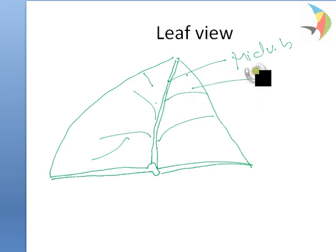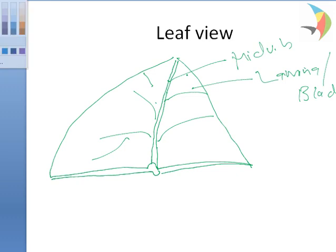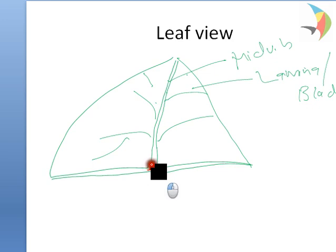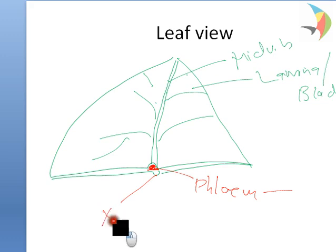This is the lamina, we call it lamina or blade. The upper part forms the phloem and the lower part is called xylem. This combined forms a vascular bundle.